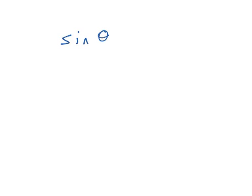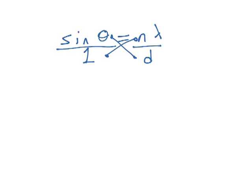Sine theta equals n lambda over D — it could be the fifth, seventh, or twelfth order if you can get that far. As with other proofs, we have two fractions either side of an equals sign. Sine theta over 1, cross-multiplied: 1 times n lambda gives n lambda, and D times sine theta gives D sine theta. So the final formula is n lambda equals D sine theta.